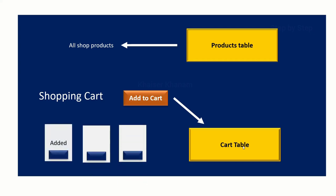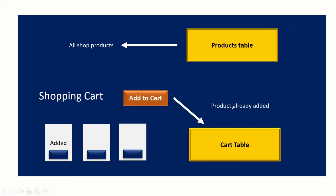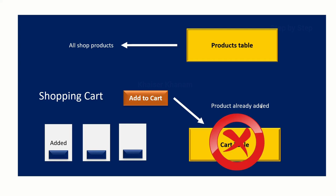Now suppose I have three products and the first product I have already inserted into the cart — all three products are available in the products table. I clicked on the first product and it was added to the cart table. So when I try to click 'Add to Cart' again for that product, I should get the message 'product already added' and the data should not be inserted again. The data should only be inserted once.